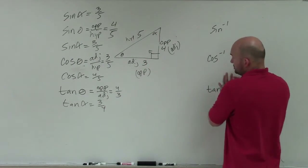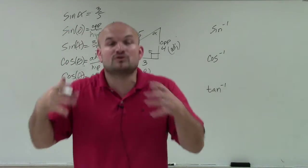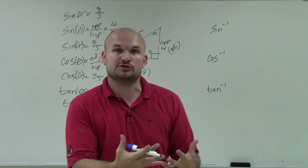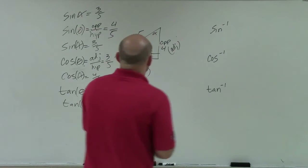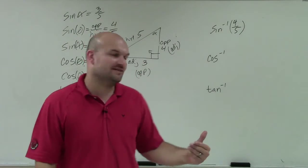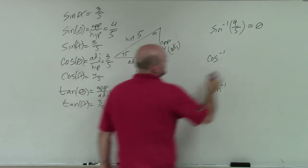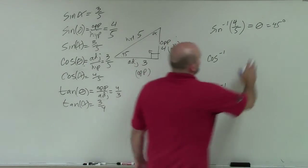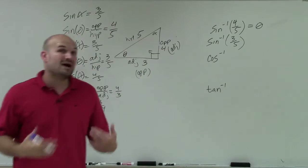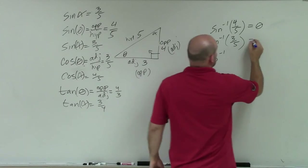The important thing to notice is that we always take the sine, cosine, or tangent of an angle — asking what ratio is related to that angle. The inverse functions say the exact opposite: instead of asking what is the ratio, they ask what angle gives me this relationship. For instance, the inverse sine of 4 fifths asks: what angle gives me that ratio? And the inverse sine of 3 over 5 is alpha, because the sine of alpha was 3 over 5.